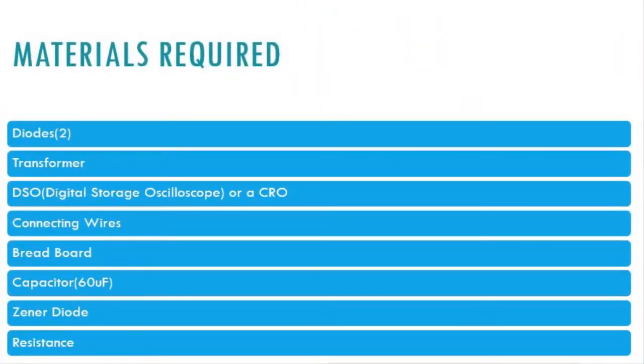The materials required are 2 diodes, a transformer, a DSO that is a digital storage oscilloscope or CRO, some connecting wires, a breadboard, a capacitor preferably of 50 microfarads, zener diodes and some resistances preferably of the order of some kohms.